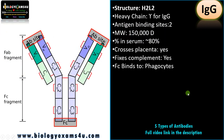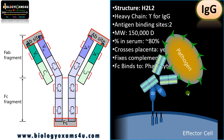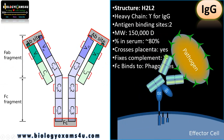The FC region can bind to phagocytes like monocytes and macrophages. For example, when IgG has bound to an epitope on a pathogen, the FC region can directly interact with effector cells like cytotoxic T cells and natural killer cells, or other phagocytes like macrophages.